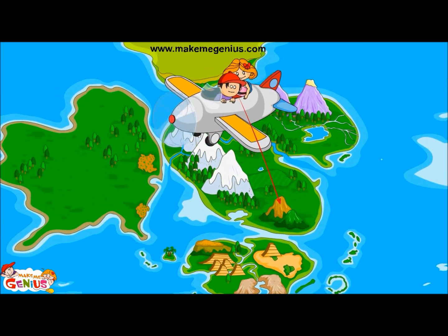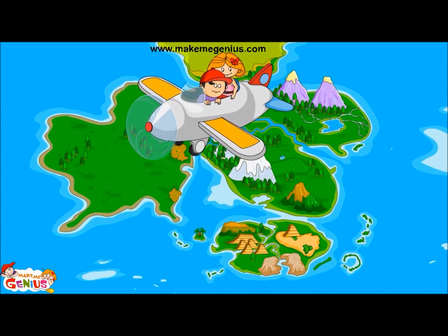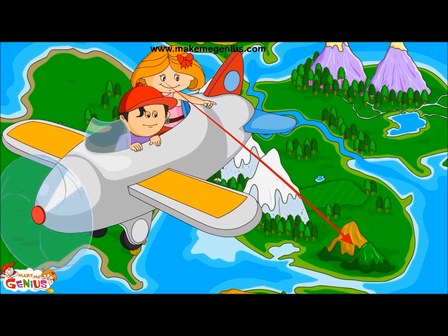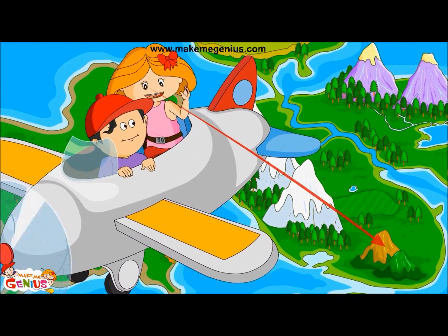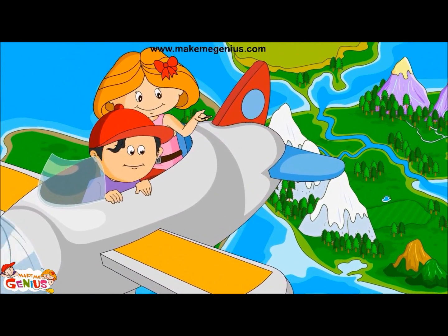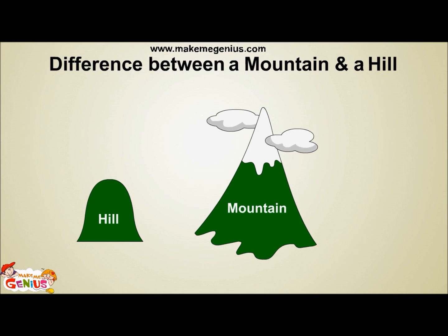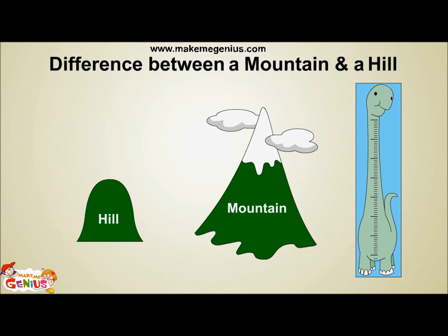I can see a small mountain. Oh, that is not a small mountain — that is a hill. Let's look at a picture. If the land is not too high, it is called a hill. A mountain is very high. Scientists measure the height of the land and based on height, they decide whether it is a mountain or a hill. Now I understand the difference between a mountain and a hill.